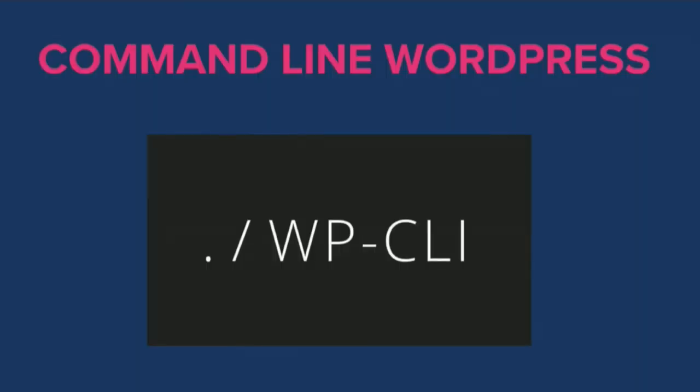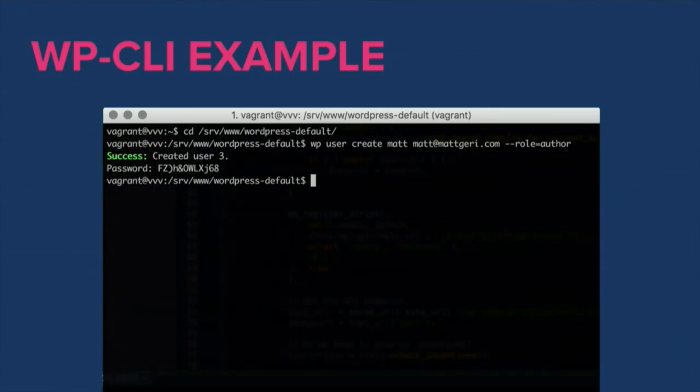Before finishing the first component, let's talk about command-line WordPress. WP-CLI is one of my favorite tools — a super useful piece of software that lets you manage your WordPress installation directly from the command line. You don't have to go to wp-admin to create a user or a post; you can do it in a single command. For example, I've navigated to the WordPress directory on my VVV box and typed 'wp user create matt@mattjerry.com' with a role of author, and that user now exists in WordPress.